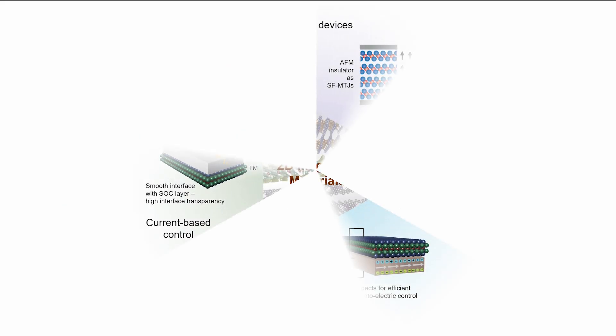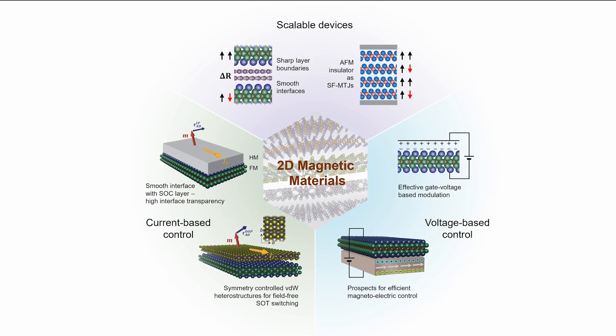A special class of magnetic materials called two-dimensional Van der Waals materials are particularly well suited for building spintronic computing devices in a scalable and reliable manner.